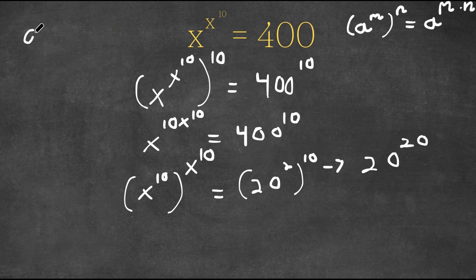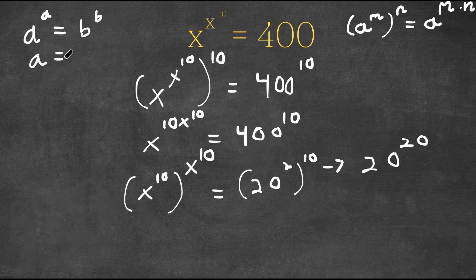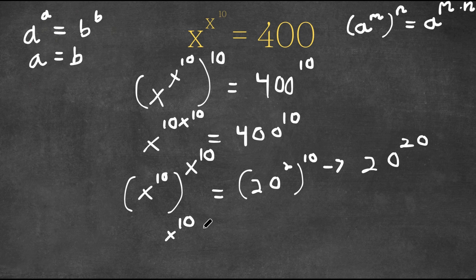So if we have something in the form a to the power of a is equal to b to the power of b, then this means that a is equal to b. So in this case, we have x to the power of 10 to the power of x to the power of 10 is equal to 20 to the power of 20. This means that x to the power of 10 is equal to 20.